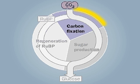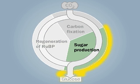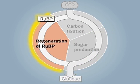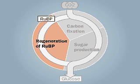The Calvin cycle is a plant metabolic cycle in which carbon is fixed in carbohydrates, sugar products including glucose are made, and the starting compound of the cycle, ribulose 1,5-bisphosphate, or RUBP, is regenerated.